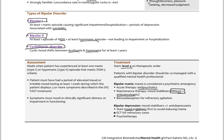To summarize: know the assessment tools like the PHQ-9, the criteria differentiating major depression, minor depression, and dysthymia, the different types of depression including postpartum and seasonal affective disorder, and the definitions of bipolar 1, bipolar 2, and cyclothymia, including the assessment and treatment for each.